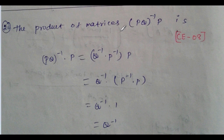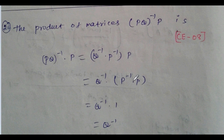Find the product P times Q-inverse times P-inverse (Chemical Engineering 2008). PQ⁻¹P⁻¹ equals Q⁻¹ times P⁻¹ times P — wait, simplifying: P-inverse times P equals the identity matrix I. So the answer is Q-inverse.